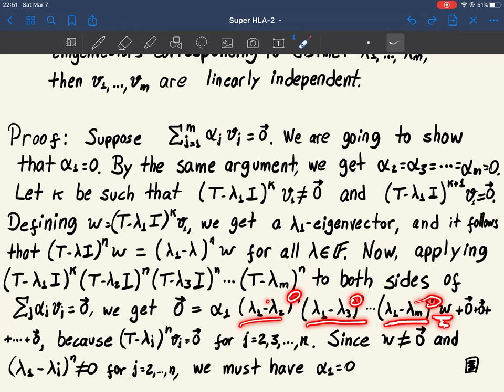Now what happens for j equal 2? As I said already, this part of the operator will kill the vector. For j equal 3, this part of the operator will kill the vector. So we get 0, 0, 0, all the other terms in this sum will be 0. And it will be 0 exactly by this property.